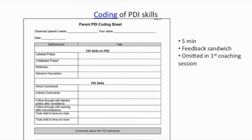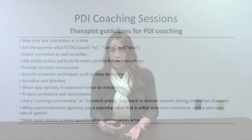The five-minute coding of PDI skills is done on the PDI coding sheet — observing the parent directing interaction and giving commands — followed by a feedback sandwich. This is omitted during the first coaching session.